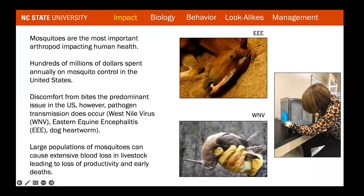Here in the United States, mosquitoes are mainly despised due to the discomfort caused by their biting. Two common pathogens you should be aware of include West Nile virus, which is big here in North Carolina and impacts birds, humans, and horses, and dog heartworm, which obviously negatively impacts dogs. A lesser advertised issue is their ability to cause significant blood loss in livestock and herd animals, leading to loss of productivity and early animal deaths.